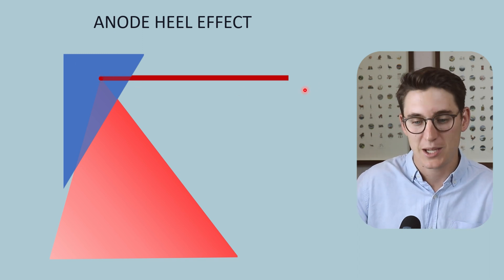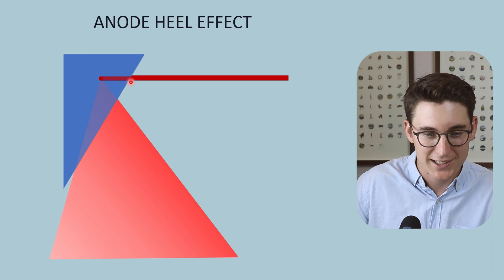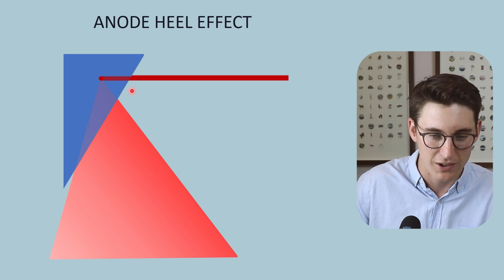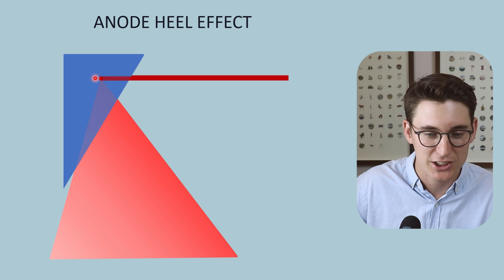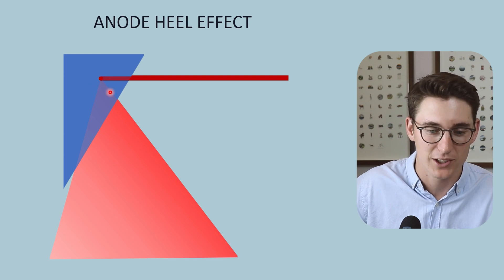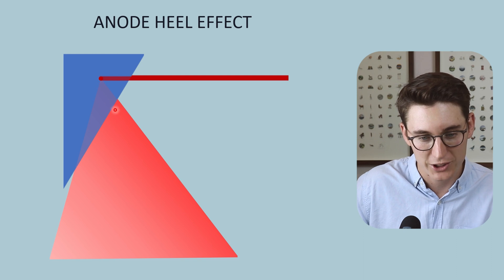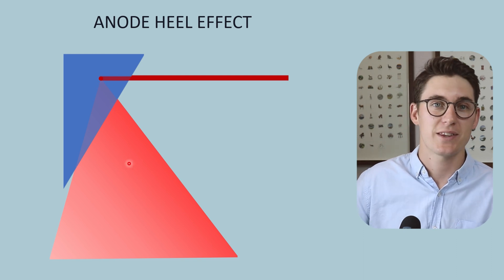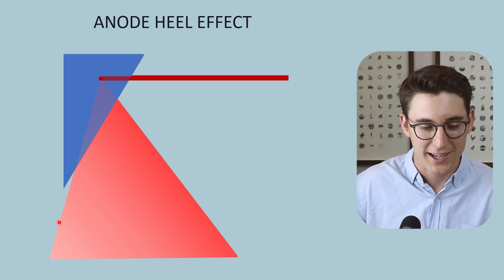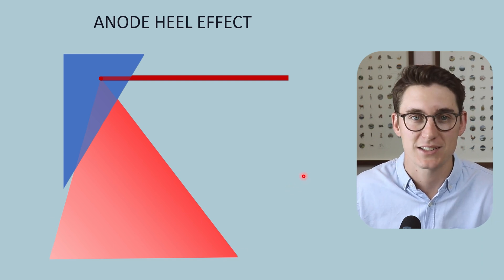Now a common misconception is that our electron beam hits our anode and forms x-rays on the surface of our anode. The x-rays are actually formed within our anode here. And it's because these x-rays have to travel through differential distances depending on whether they're on the anode or the cathode side. It leads to this variation in x-ray beam intensity.